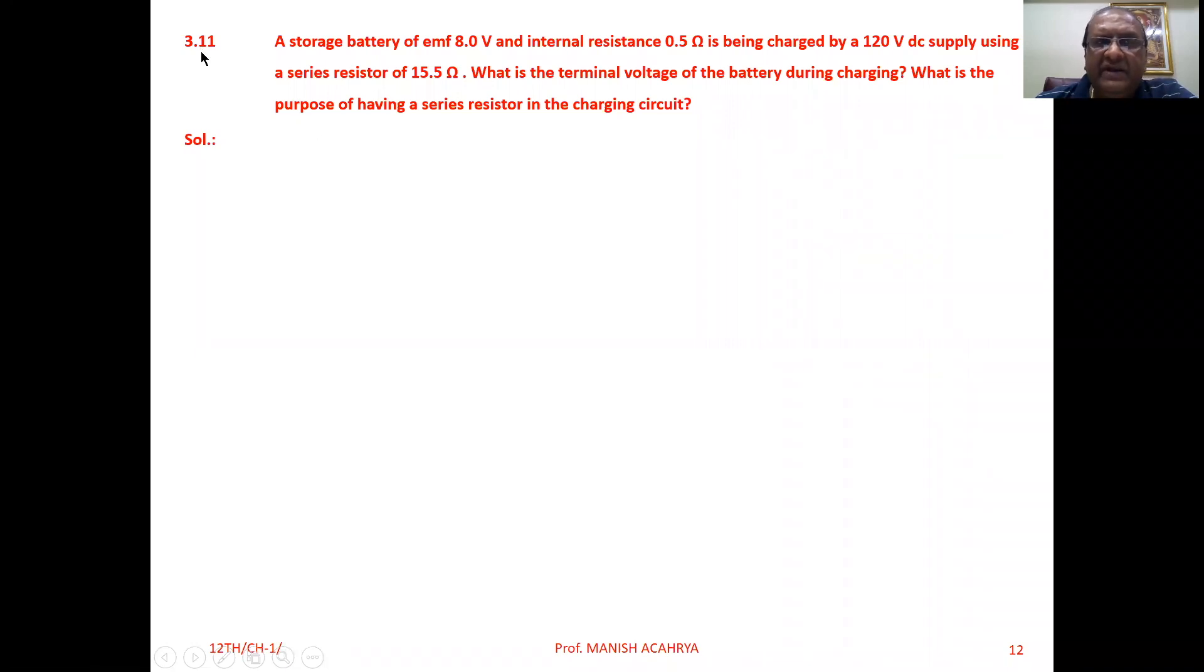Example 3.11: A storage battery of EMF 8V and internal resistance 0.5Ω is being charged by a 120V DC supply using a series resistor of 15.5Ω. What is the terminal voltage of the battery during charging? What is the purpose of having a series resistor in the charging circuit?